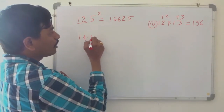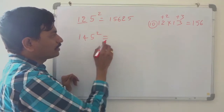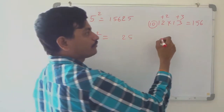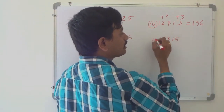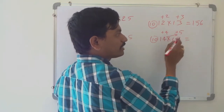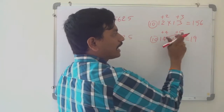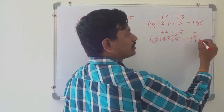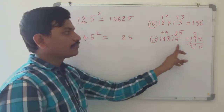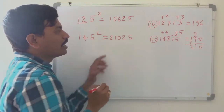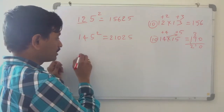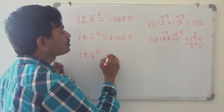Like this we can find 145 squared. 145 squared ends with 25. We need 14, next number 15. So 14 into 15: base is 10, plus 4 plus 5. Cross addition: 14 plus 5 is same as 15 plus 4, which is 19. And 5 fours are 20. So we get 2, 1, 0 — 14 into 15 is 210. So 145 squared is 21025. Like this we can find 195 squared also.